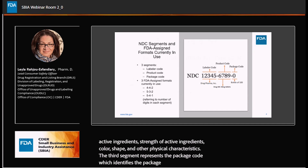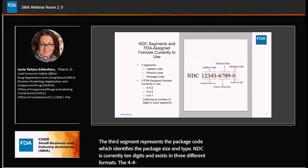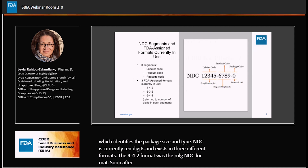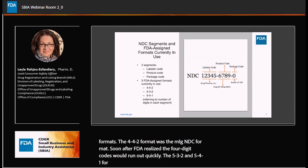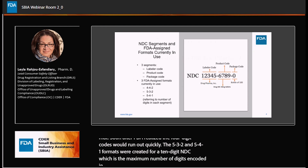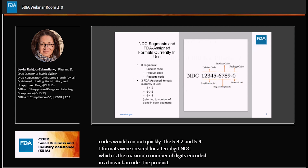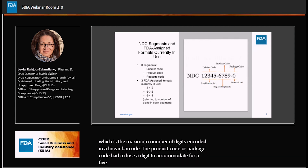NDC is currently 10 digits and exists in three different formats. The 4-4-2 format was the original NDC format. Soon after, FDA realized that four-digit labeler codes would run out quickly. The 5-3-2 and 5-4-1 formats were created to maintain a 10-digit NDC, which was the maximum number of digits that could be encoded in a linear barcode. Essentially, the product code or package code had to lose a digit to accommodate a five-digit labeler code after four-digit labeler codes were exhausted.